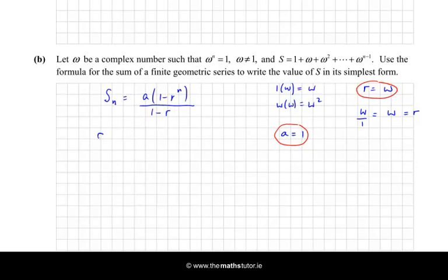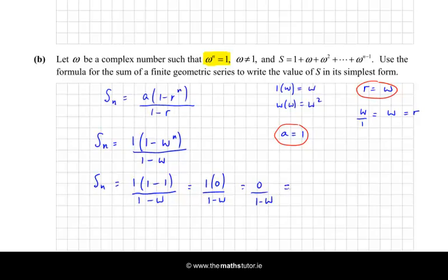So now let's put all of that into our formula, and we get Sₙ, the sum of n terms, which there is n terms in this because it goes from ω to the power of 0 up as far as ω to the n minus 1. That's going to be a, which is 1, times 1 minus ω to the n, over 1 minus ω. Okay, now we're told that ω to the n is 1, so I can substitute that into my formula, and I get that Sₙ is equal to 1 times 1 minus 1 over 1 minus ω, which is 1 times 0 over 1 minus ω, which is 0 over 1 minus ω, and that, of course, is 0.